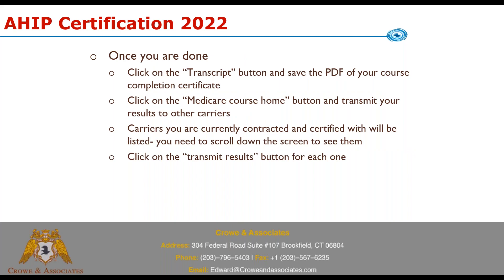Assuming you take the test and go through it with no problem — when you're done, the one thing you've got to do is click on the transcript button. You'll get a copy of your course completion certificate saying you've completed AHIP; save that so you have it. Some carriers might want to see it. Most won't, because you can also click on the Medicare course home button and transmit your result to the other carriers. Whatever carriers you're contracted with for Advantage or PDP, scroll down and transmit your completed AHIP results to them.